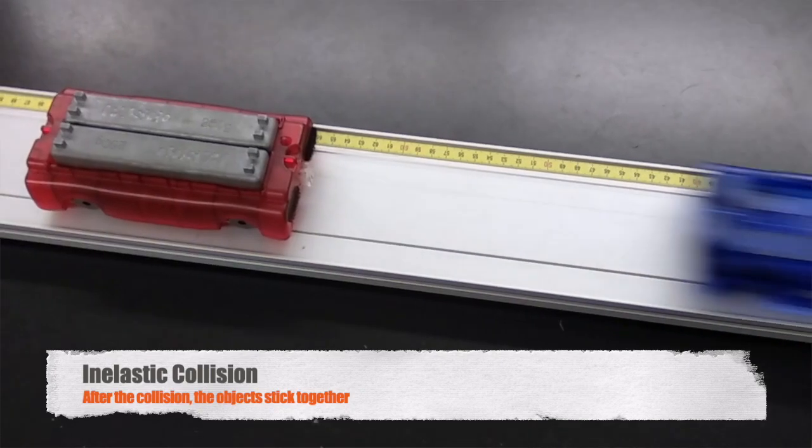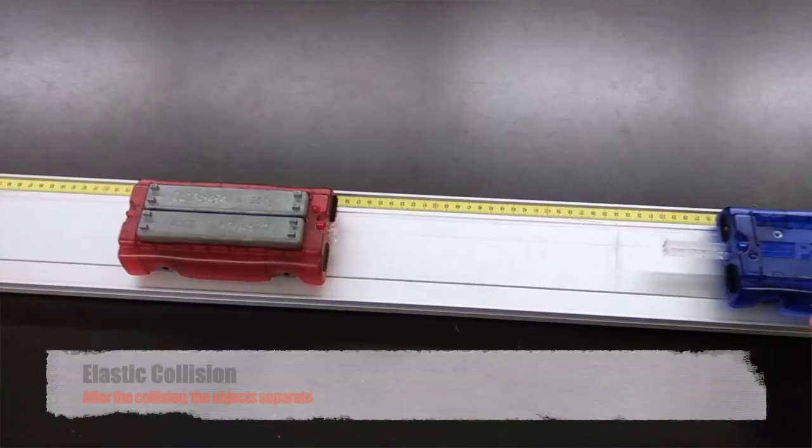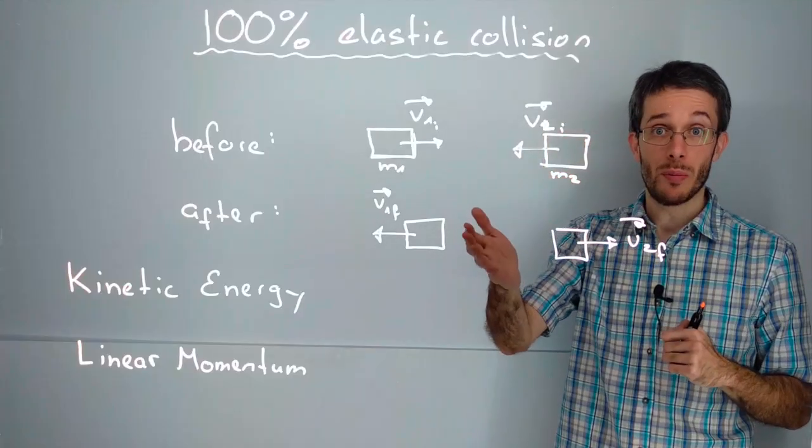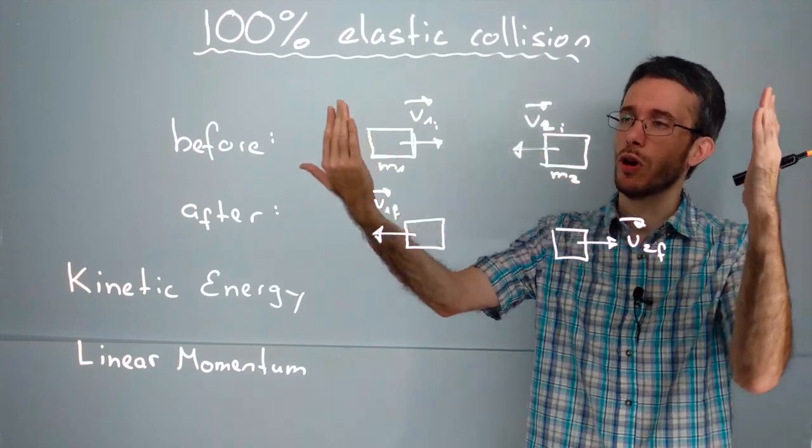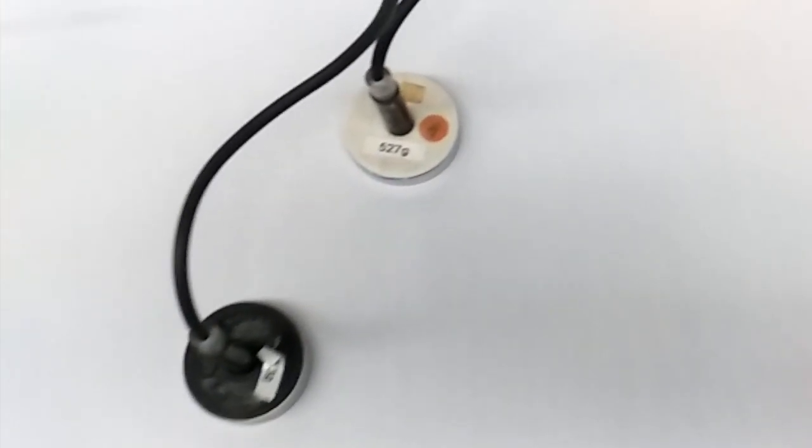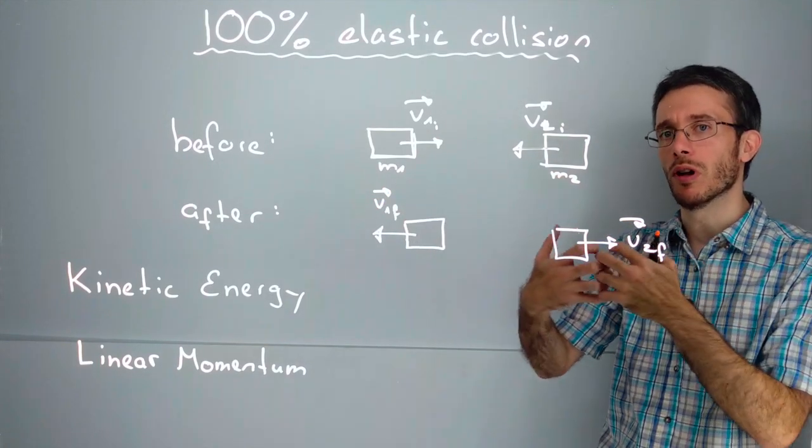After a 100% inelastic collision, the second extreme case is a 100% elastic collision. What's happening in a 100% elastic collision is that two objects that initially travel in different directions collide and then continue to travel in different directions after the collision.